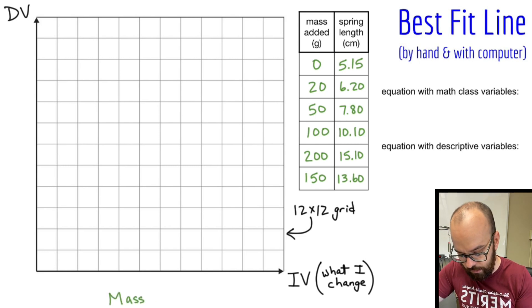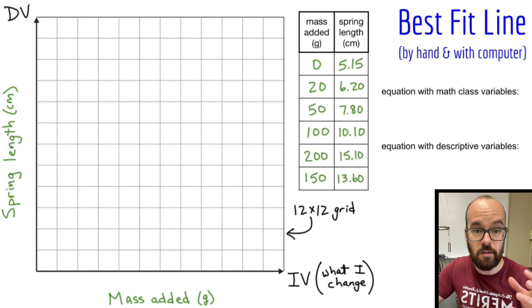My independent variable here is going to be the mass I added. I'm going to put my units there, all my measurements are in grams. And my dependent variable will be the spring length, which is going to be in centimeters.